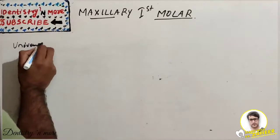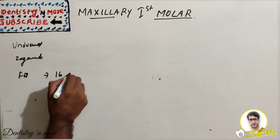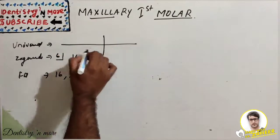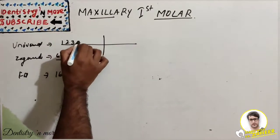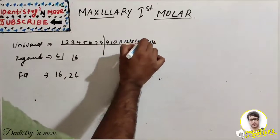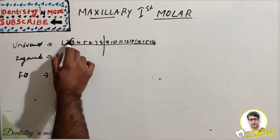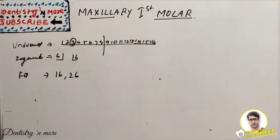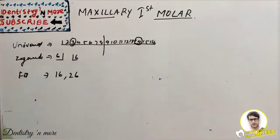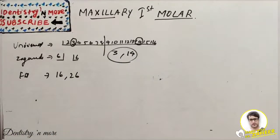Each system: the Universal system, the Zsigmondy-Palmer system, and the FDI system. FDI is 1.6 and 2.6. Zsigmondy is 6 and 6. In the Universal system: 1, 2, 3, 4, 5, 6, 7, 8, 9, 10, 11, 12, 13, 14, 15, and 16 — central, lateral, canine, first premolar, second premolar, and first molar. So 3 and 14 are the Universal numbering system designations.